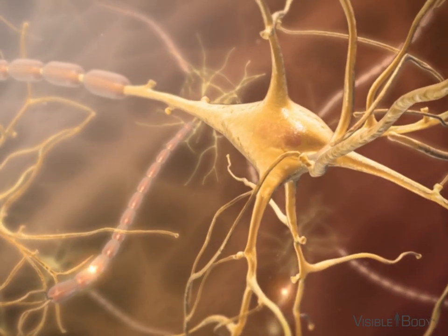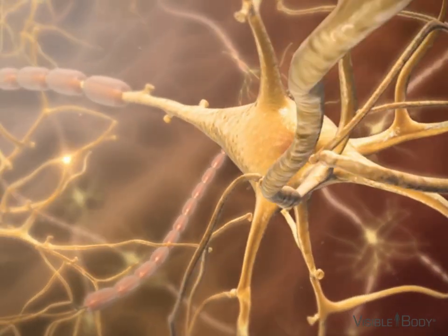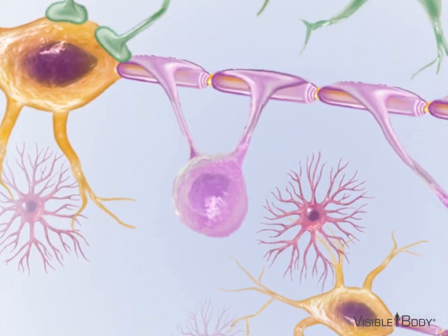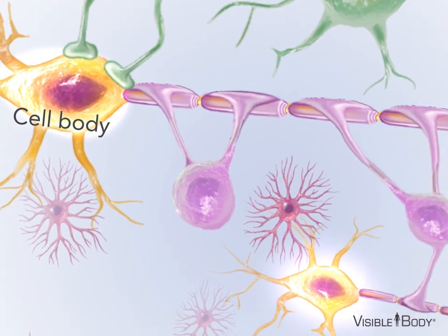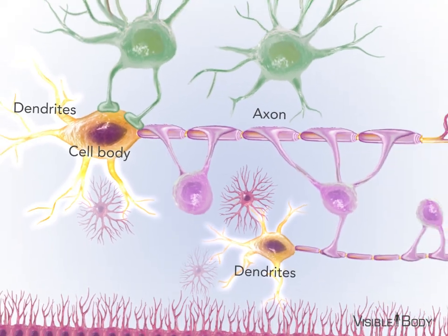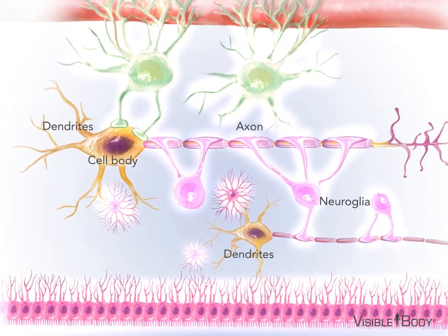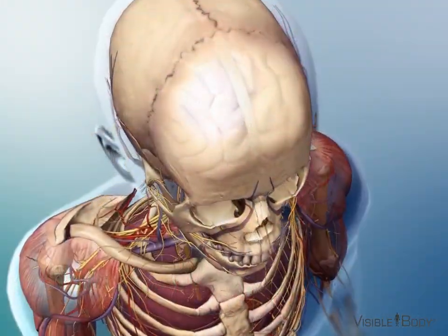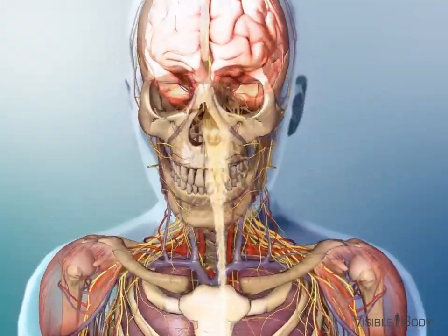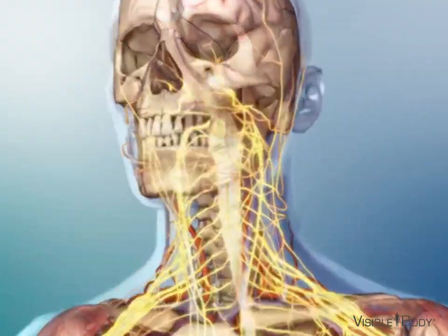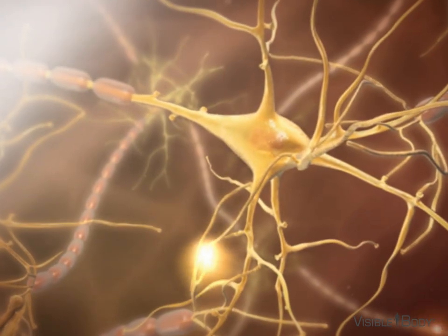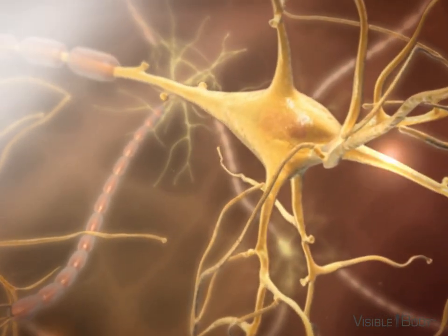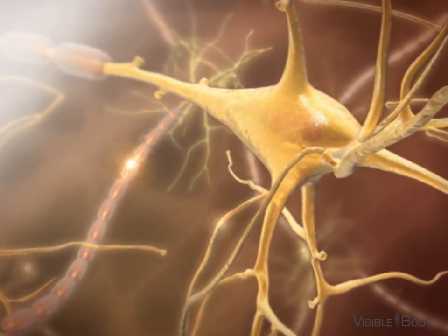Some CNS neurons have very long axons, extending out of the CNS and reaching all the way to the periphery of the body. Both the brain and spinal cord contain neuron cell bodies, axons, dendrites, and numerous neuroglia or glial cells. The CNS networks process incoming information at many levels and coordinate all of the body's activities in order to maintain homeostasis and control bodily functions.